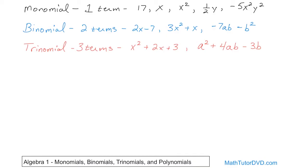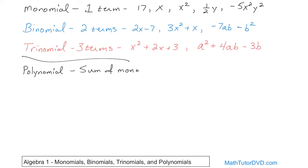Now that you have them all on the board, it's very easy. Monomial is one term. Binomial is two terms. Trinomial is three terms. Now we're going to talk about the general term, which we call polynomial. What does the prefix 'poly' mean? Poly just means many — it doesn't really mean necessarily one, two, three, four, or five. Poly means many, more than one. So a polynomial is a sum of monomials. A polynomial is the general term — whether it's a binomial or a trinomial, anytime you have more than one term added or subtracted together, we can call it a polynomial.